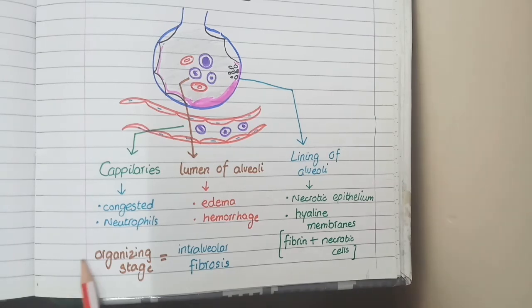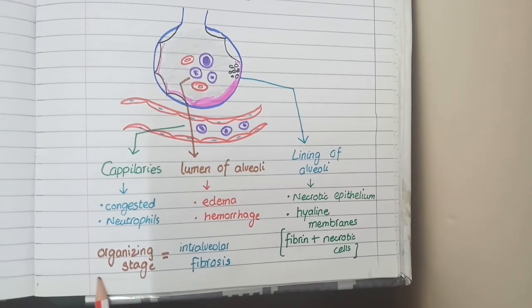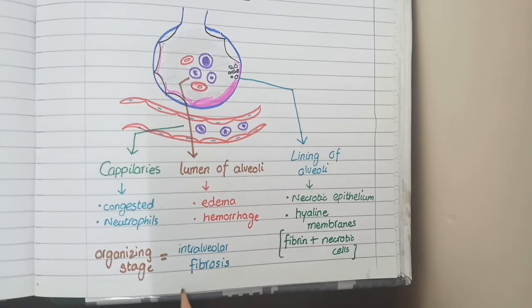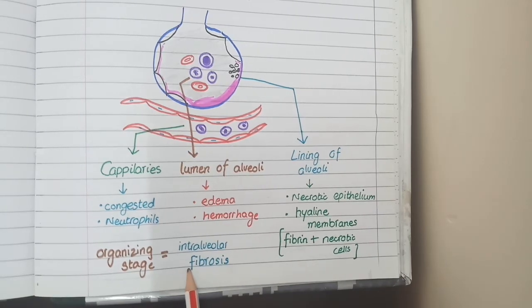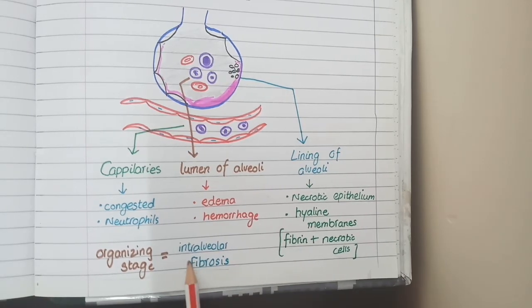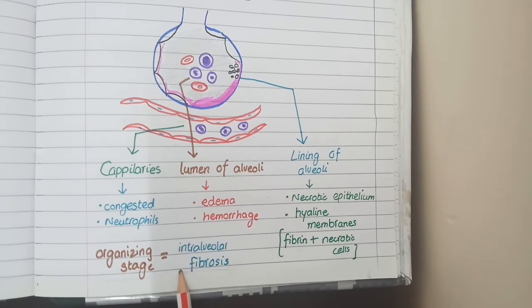Now here is an additional point that in organizing stage of acute respiratory distress syndrome, fibrosis starts to happen in alveoli which we call as intra-alveolar fibrosis. Because this fibrosis is happening inside the alveoli.